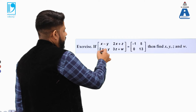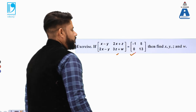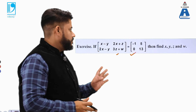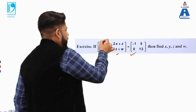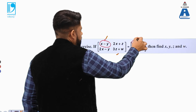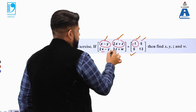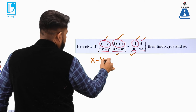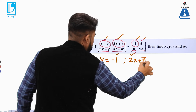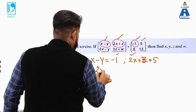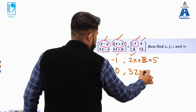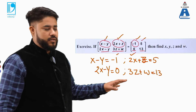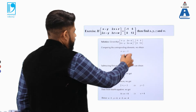Next question: two matrices are given to be equal, and you need to find the unknown variables in them. The concept for equal matrices is that when two matrices are equal, their individual corresponding elements are equal. So the first element equals the first, the second equals the second, and so on. Equating corresponding elements gives: x − y = −1, 2x + z = 5, 2x − y = 0, and 3z + w = 13. You now have 4 equations and 4 unknowns.